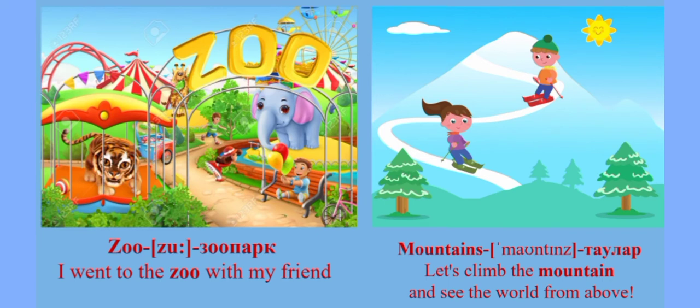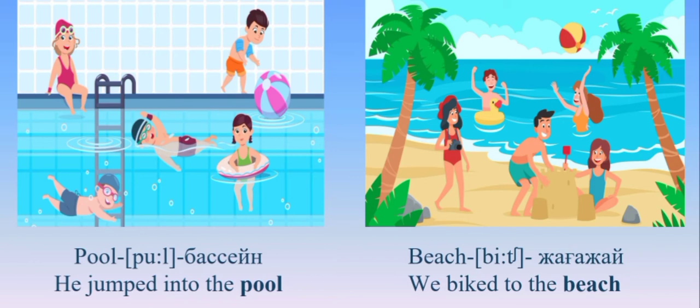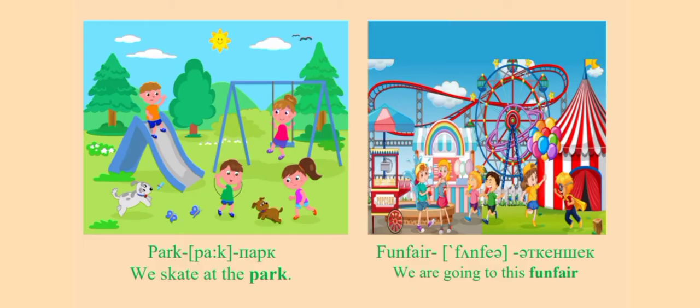So please open your copy books and write down these new words. Қазір біз жанасудермен таныс боламыз. Zoo – зоопарк. I went to the zoo with my friend. Mountains – таулар. Let's climb the mountain and see the world from above. Pool – басейн. He jumped into the pool. Beach – жаға жай. We biked to the beach. Park – парк. We skate at the park. Fun fair – атқиншик. We are going to this fun fair.